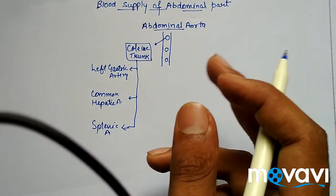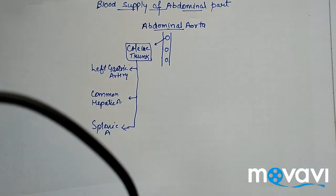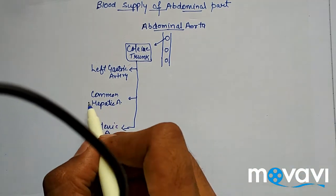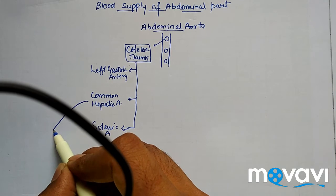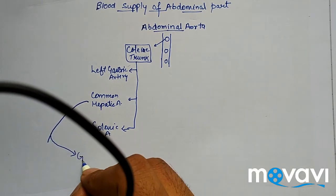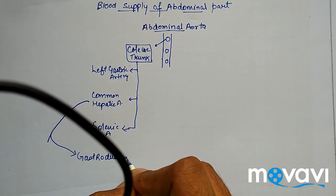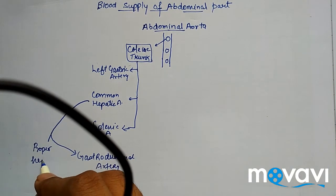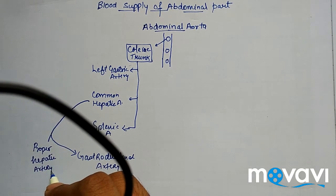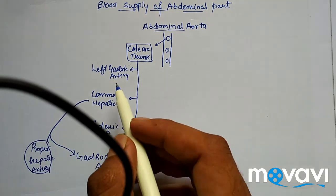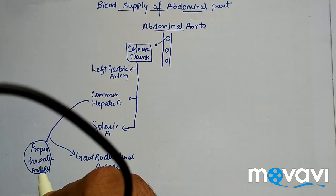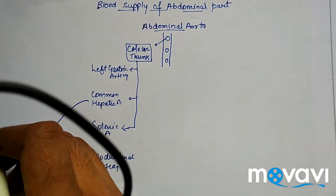Now further, the common hepatic artery gives off a branch known as the gastroduodenal artery, and then the continuation of the common hepatic artery is called the proper hepatic artery. So the common hepatic artery, after giving off the gastroduodenal artery, is called the proper hepatic artery.